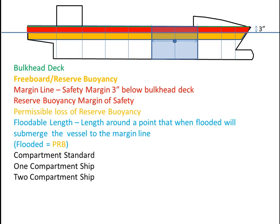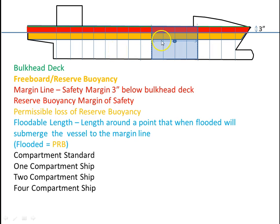You could have a three-compartment ship or a four-compartment ship. If we just divided these up in half again, you can see one, two, three, four — this would be a four-compartment ship.